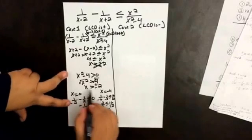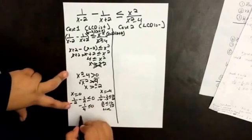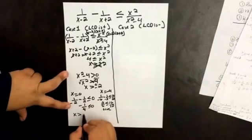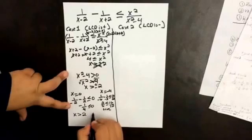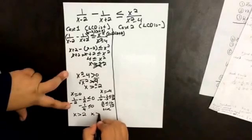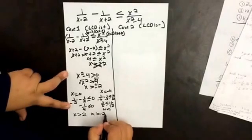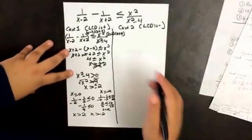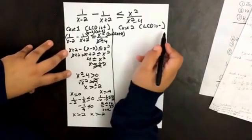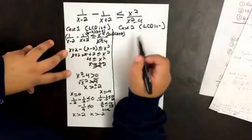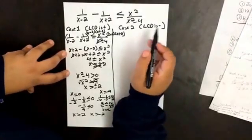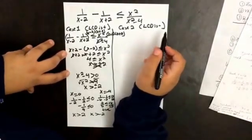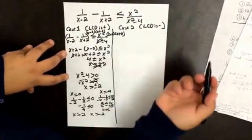So for this side, we have that x is greater than 2 and x is greater than negative 2. Now let's go to the other side when our least common denominator is negative.